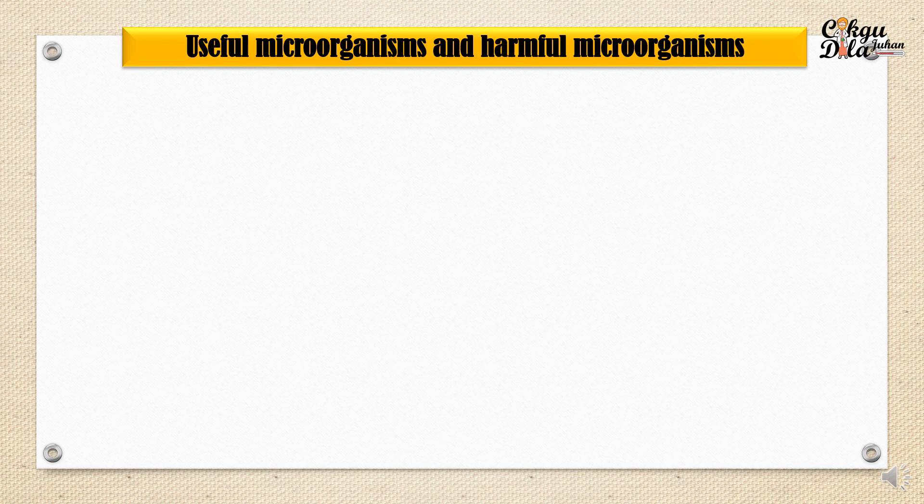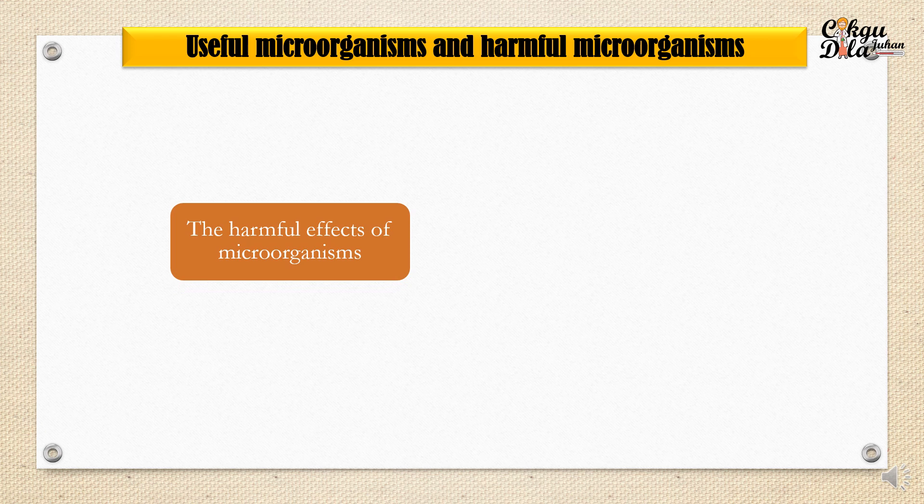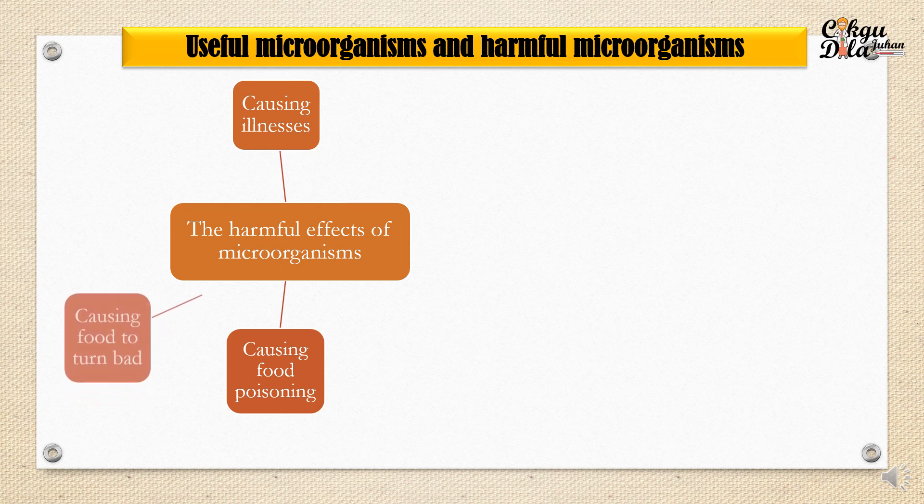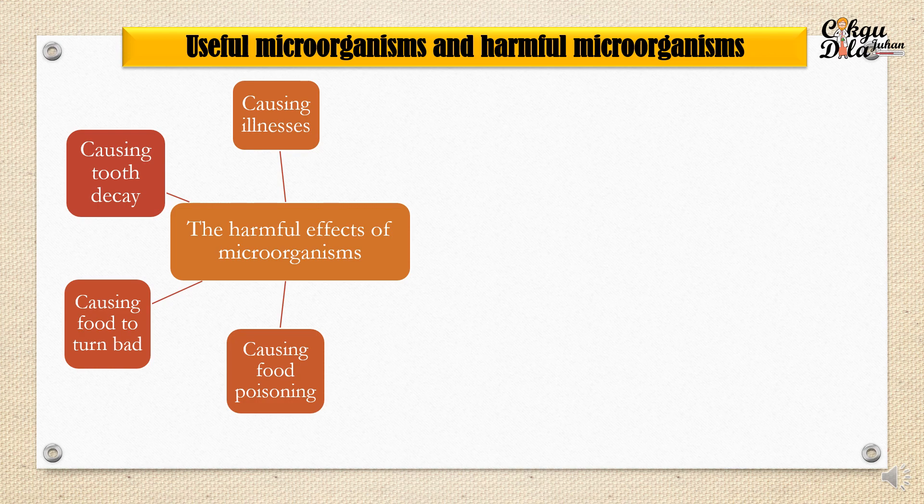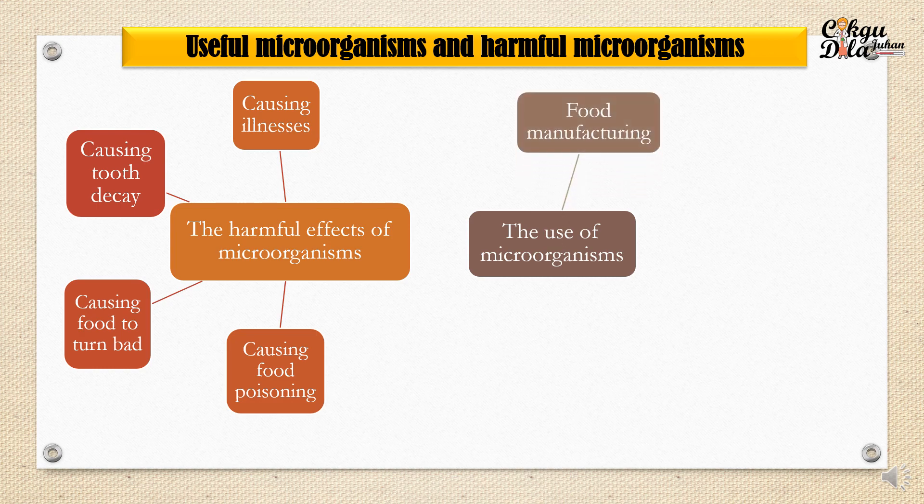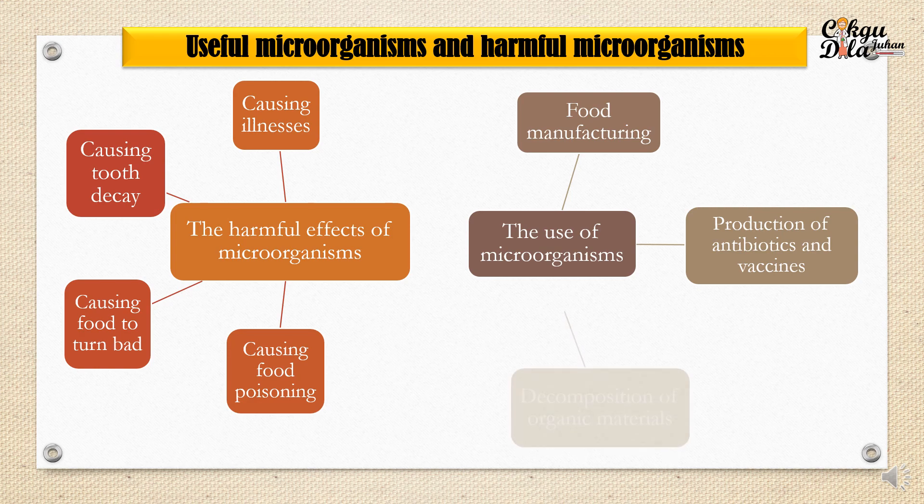The harmful effects of microorganisms include causing illness, causing food poisoning, causing food to turn bad, and also causing tooth decay. But the uses of microorganisms can be in food manufacturing, production of antibiotics and vaccines, and also for the decomposition of organic materials. We will go through one by one the harmful effect of microorganisms and the use of microorganisms.